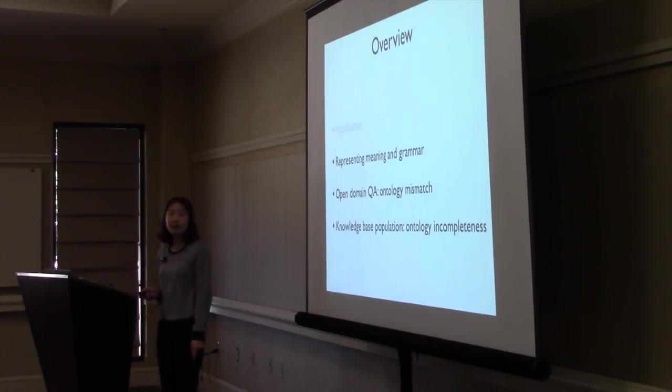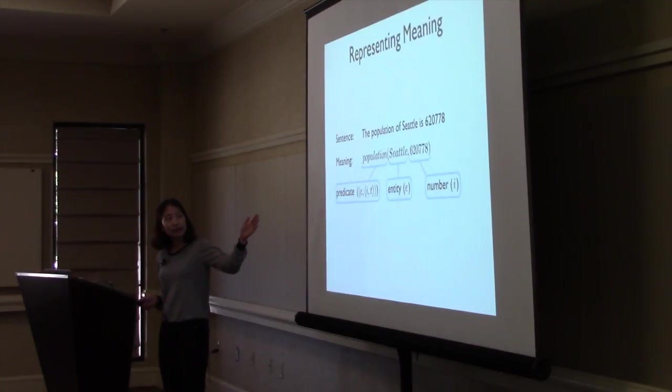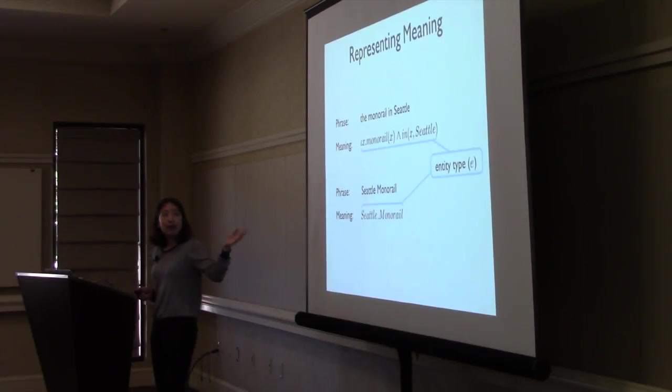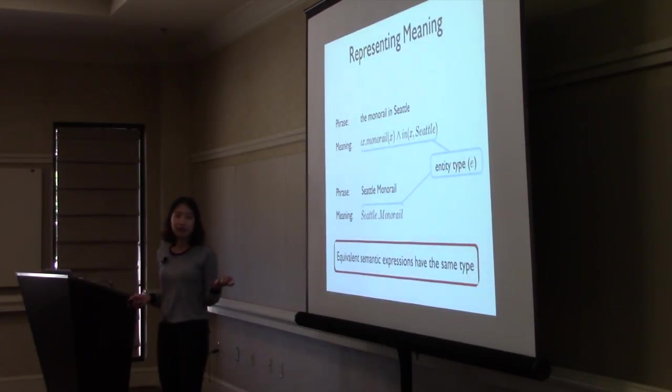In this talk, I'm going to discuss how we represent meaning and grammar when building those meaning representations, and how we do question answering when dealing with large-scale knowledge bases, and a bit about populating the knowledge base when there are no facts there. We represent meaning with formalism where these predicates are typed to have either entities or numbers or a functional type that takes entities and numbers. Phrases of same meanings have the same types, even though they can have different structures. So equivalent semantic expressions have the same type.